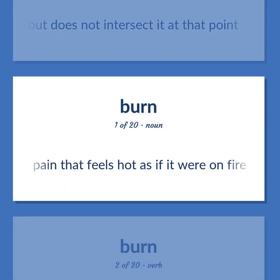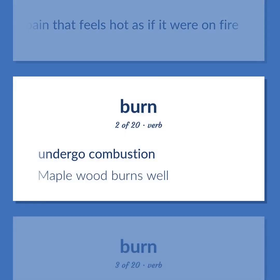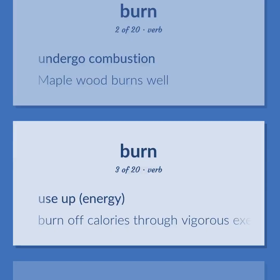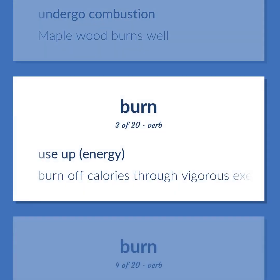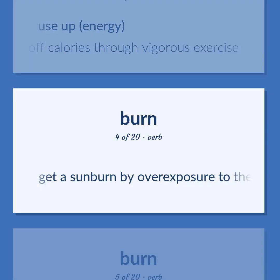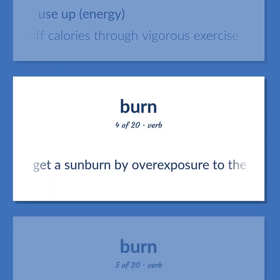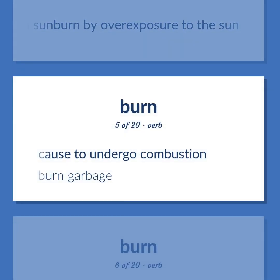Burn: Pain that feels hot as if it were on fire. Undergo combustion — maple wood burns well. Use up energy — burn off calories through vigorous exercise. Get a sunburn by overexposure to the sun. Cause to undergo combustion — burn garbage.